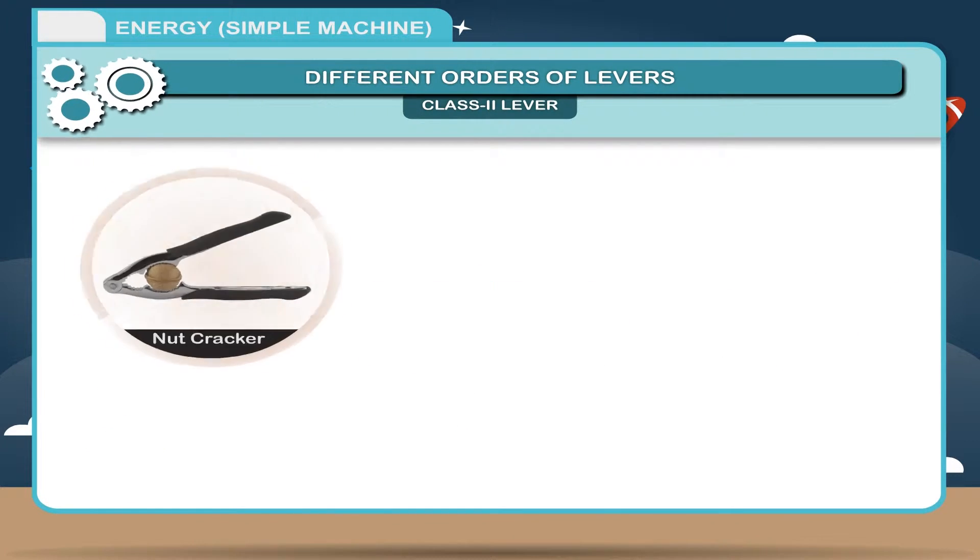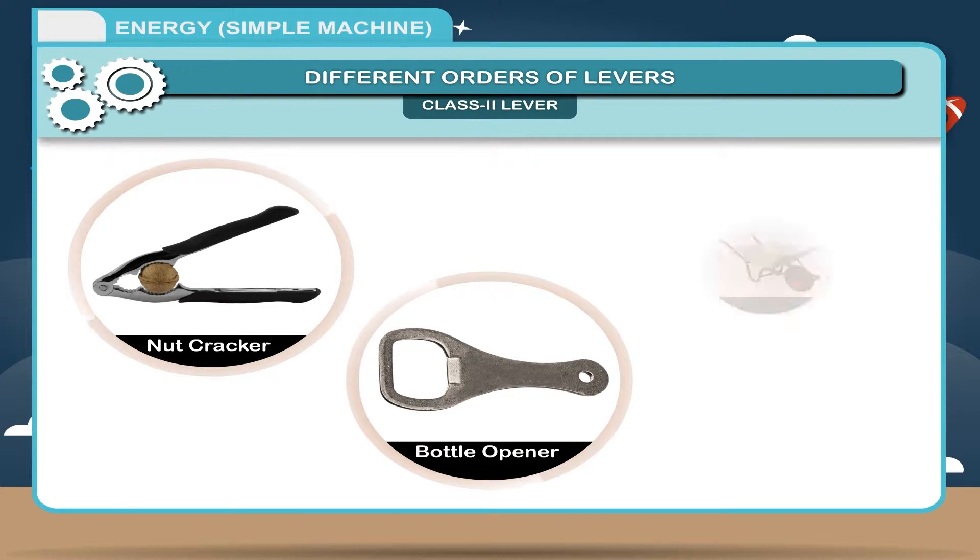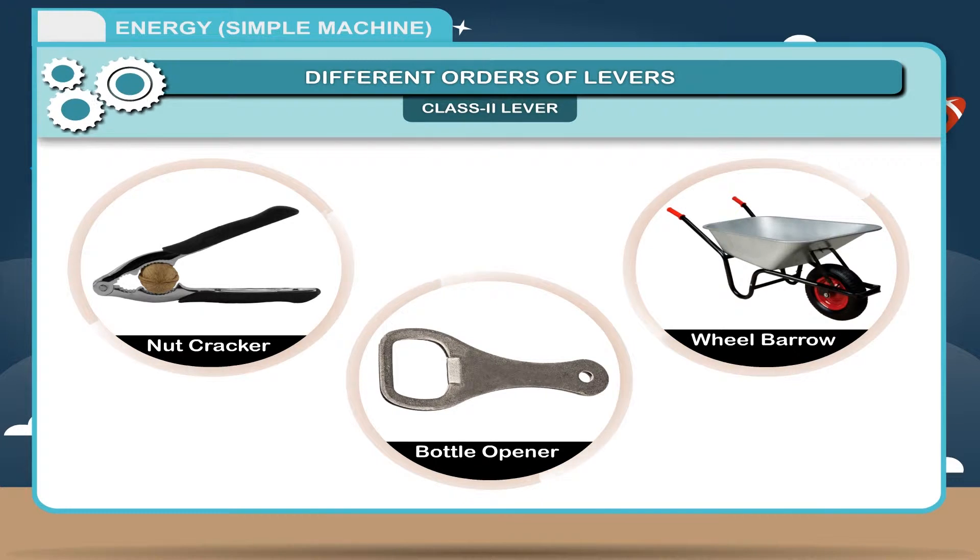Examples: A nutcracker, a bottle opener and a wheelbarrow are the examples of class 2 lever.